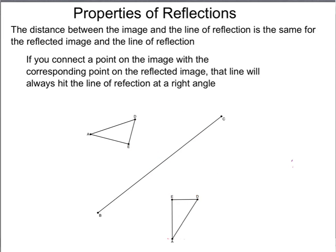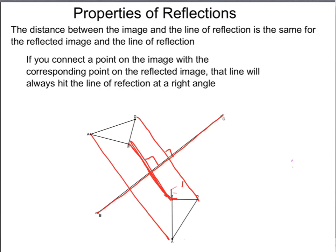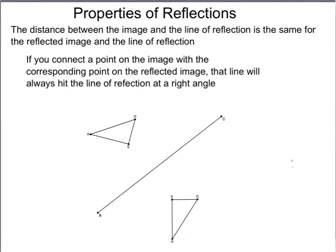Property two: if you connect a point on the image with the corresponding point on the reflected image, that connecting line will always hit the line of symmetry at a right angle. For example, connecting D and D prime gives right angles, and connecting A and A prime likewise. Even a random mid-segment point between E, D and E prime, D prime would hit the line of reflection at a right angle.